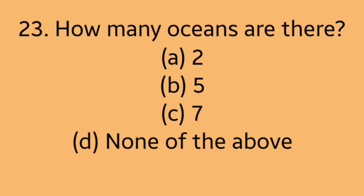Question 23: How many oceans are there? Option A: 2. Option B: 5. Option C: 7. Option D: none of the above. Answer is Option B, 5.